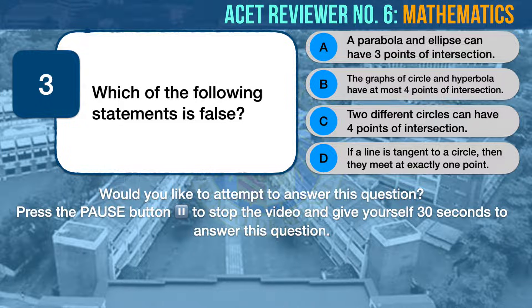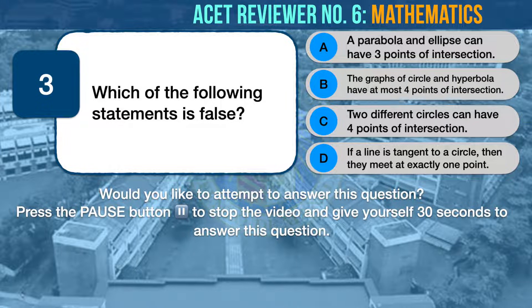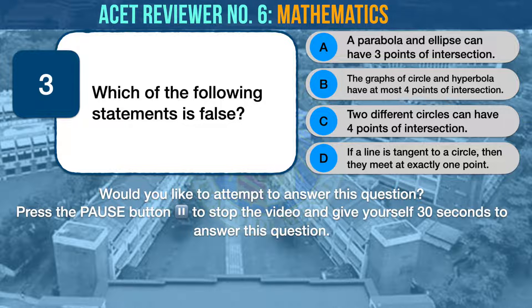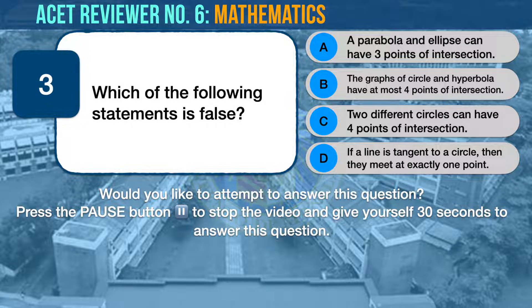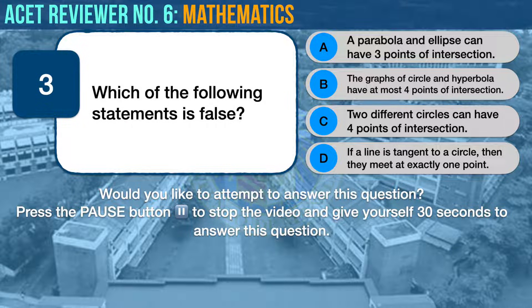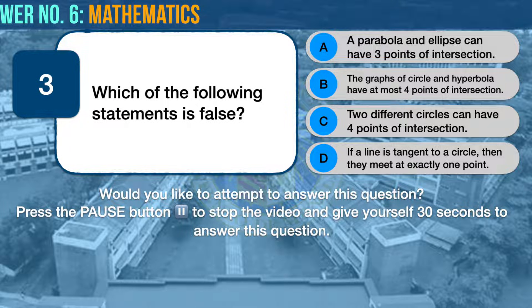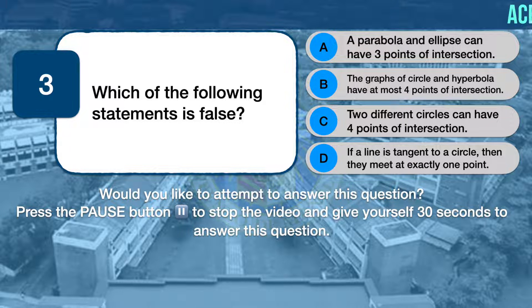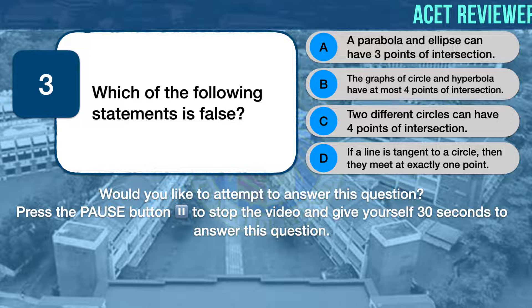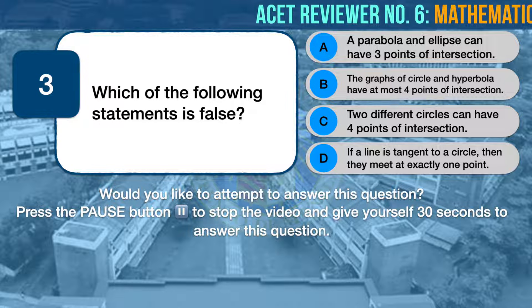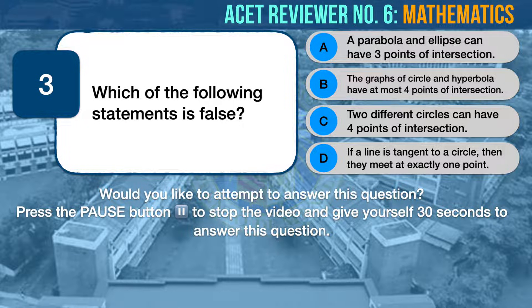Math question number 3. Which of the following statements is false? A, a parabola and ellipse can have three points of intersection; B, the graphs of a circle and a hyperbola have at most four points of intersection; C, two different circles can have four points of intersection; D, if a line is tangent to a circle, then they meet at exactly one point.